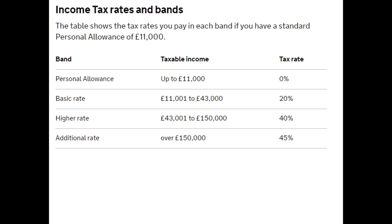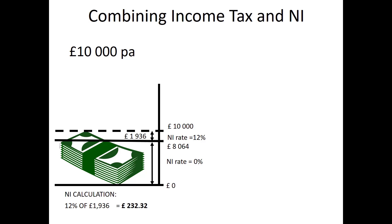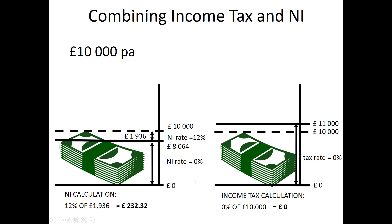Let's look at what happens when we put these two sets of calculations side by side. Quick reminder: here are the income tax thresholds, which are a bit different from the National Insurance thresholds, and of course they are calculated annually. We don't look at cases above £100,000 because the situation gets a little complex. For the low income of £10,000 a year: we've already established this person pays £232.32 a year in National Insurance. However, their £10,000 income doesn't actually reach the £11,000 threshold for the 20% tax rate to start, so they pay no income tax. Their total deductions are therefore £232.32.